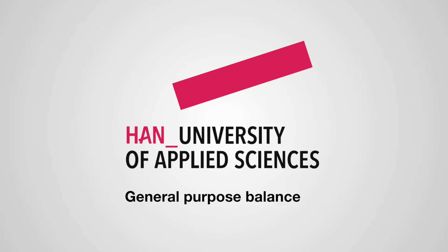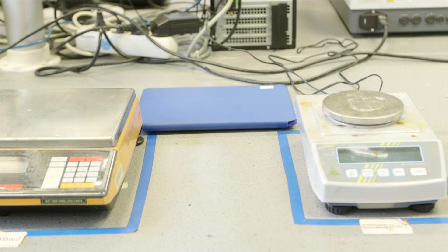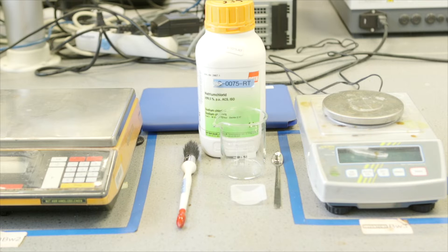Using a general purpose balance. To use the general purpose balance, you need the following materials: your lab journal, a spatula, weighing boat, glass beaker, the general purpose balance, a brush, and paper.